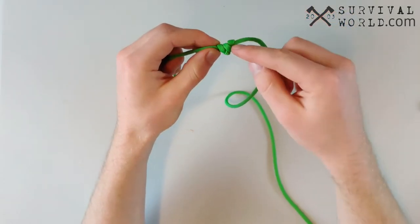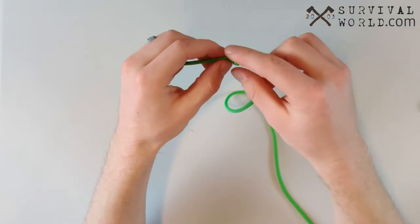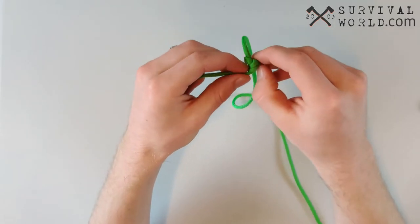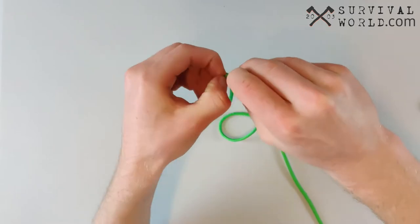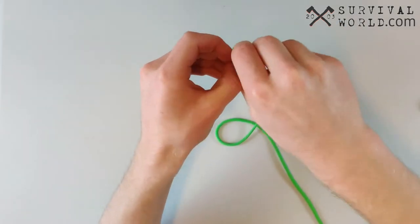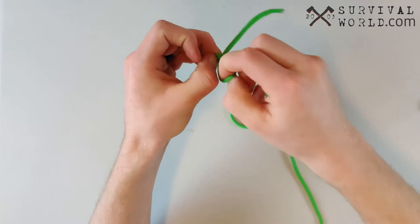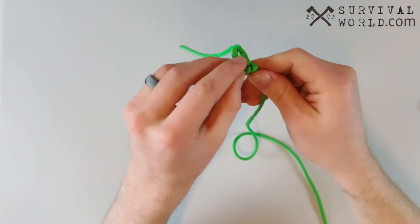And for the double barrel knot, as you see I did it incorrectly here, you need to make sure that these loops stay parallel with each other when you're pulling it tight. So I'm going to take this knot apart and tie it again. This time I'm going to make really sure that those three little coils just stay nice and parallel when I'm getting this knot nice and snug here.